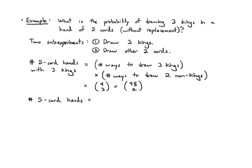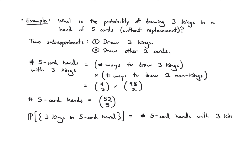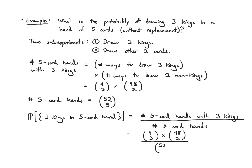The total number of five-card hands, regardless of order, is 52 choose 5. So the probability of getting exactly three kings in a five-card hand is (4 choose 3) times (48 choose 2) over (52 choose 5), which works out to 4,512 over 2,598,960, approximately 0.0017.